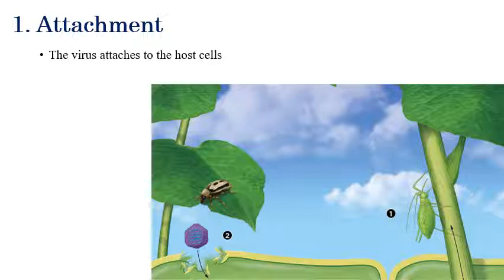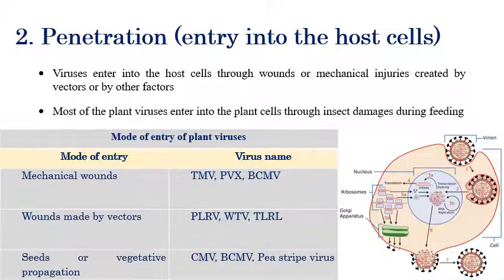The first step in virus replication is attachment. The viruses initially come in contact with the plant or host and attach to the host cells. Plant viruses cannot transmit on their own or through air, so they are transmitted by vectors, especially insects. In this diagram, we can see that the virus is initially transmitted through insects that come in contact with the host.